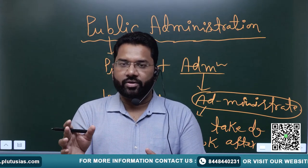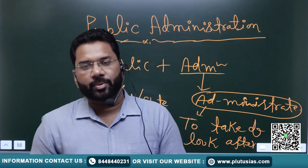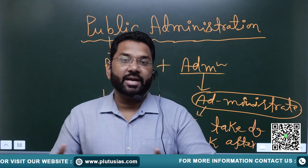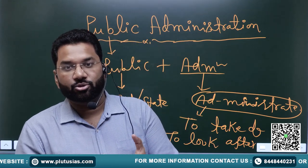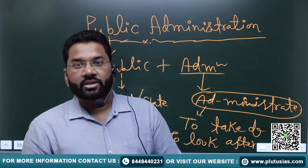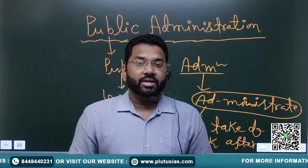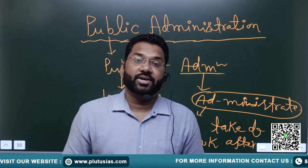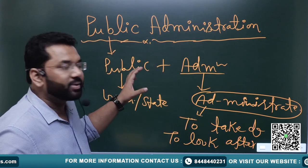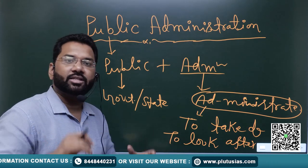When we say government is taking care of people, it is very subjective. Taking care may relate to anything — they may require a house to live in, clean drinking water, clean air, a clean environment, better transportation facilities, better schooling, or better health. So you can imagine the ambit of public administration — it is very big. Whatever government is doing is coming under public administration.